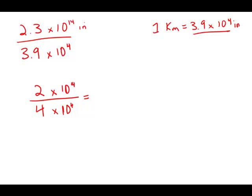Well, 2 over 4 — that's 0.5. And 10 to the 14th divided by 10 to the 4th: you may remember the laws of exponents — that is 10 to the 14th minus 4.